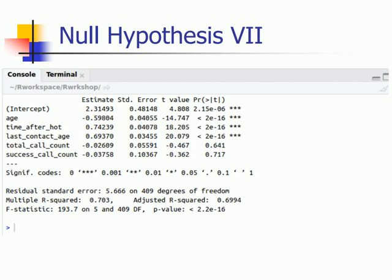The p-value for each term tests the null hypothesis that the coefficient is equal to zero - no effect. So a low p-value, less than 0.05, indicates that you can reject the null hypothesis.